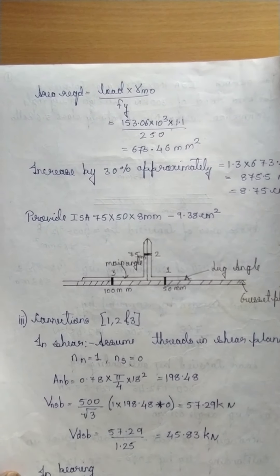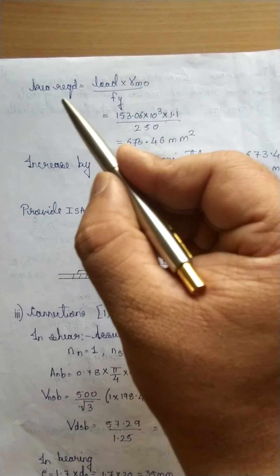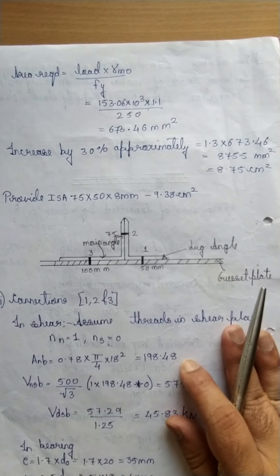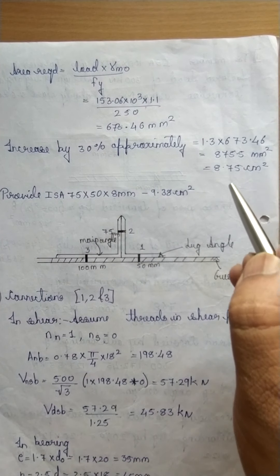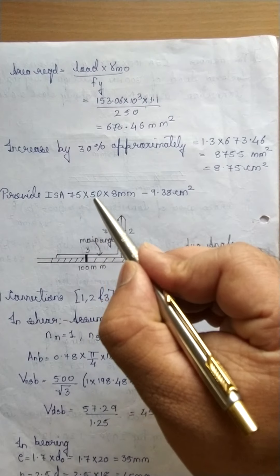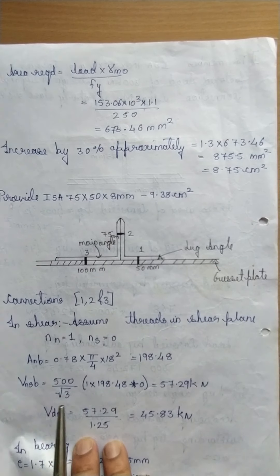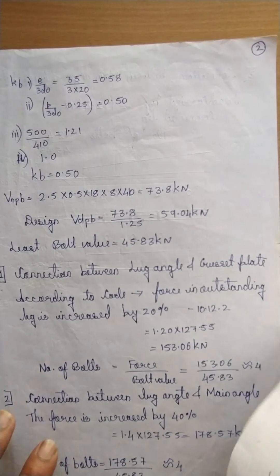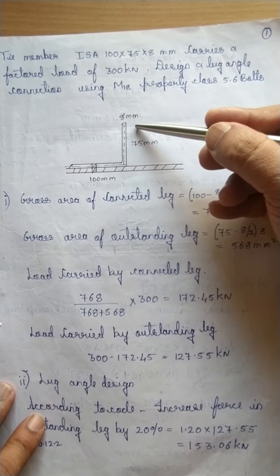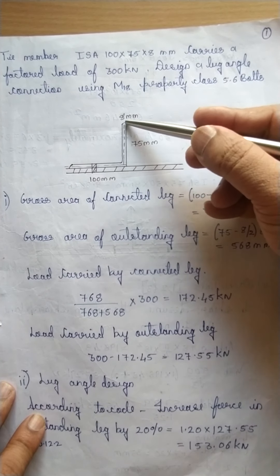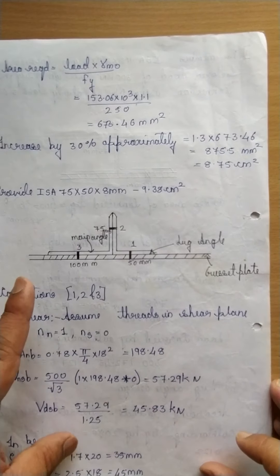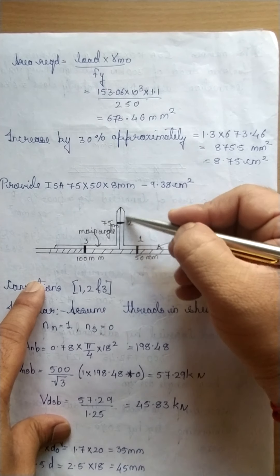First, we find the section for the lug angle. Cross-sectional area required = load × γ_m0 / f_y. Approximately increasing by 30 percent, we get the required area. From the steel table, for this area I have chosen ISA 75 by 50 by 8 mm. Remember to select an angle section where the outstanding leg matches the main angle's outstanding leg, which is 75 mm here. So ISA 75 by 50 by 8 means the 75 mm leg and 50 mm leg.